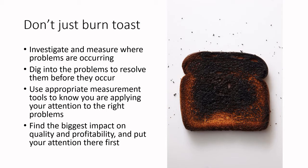So don't just burn toast. Investigate and measure where problems are occurring. If we're burning our toast, somewhere in that system we know there's going to be something wrong with the temperature or the speed or the airflow or the conductivity within that system. We need to dig into the problem and resolve it. Ideally we're anticipating problems before they occur. Hey, it sounds like HACCP, doesn't it? Anticipating problems before they occur works for quality management systems as well.